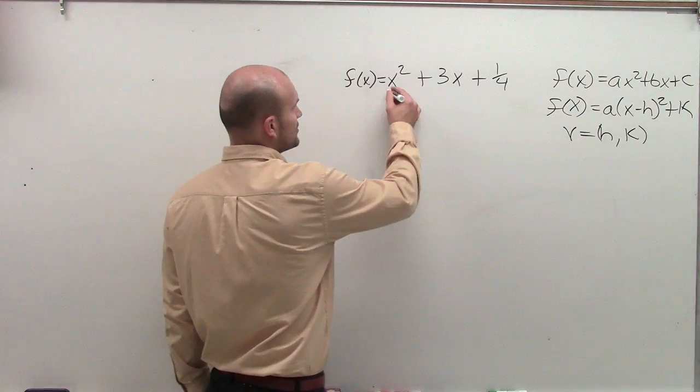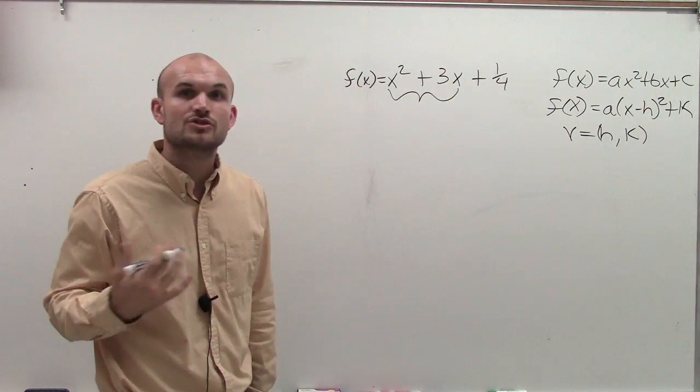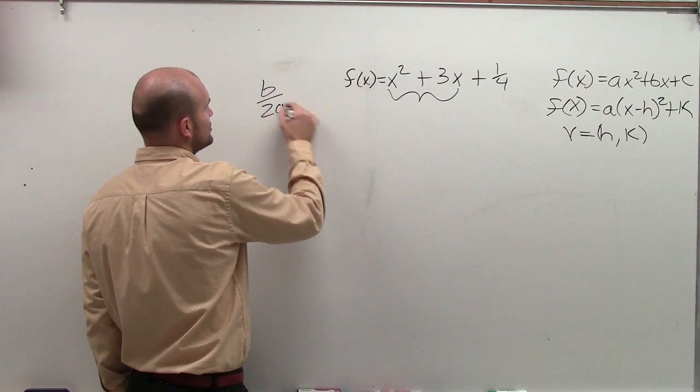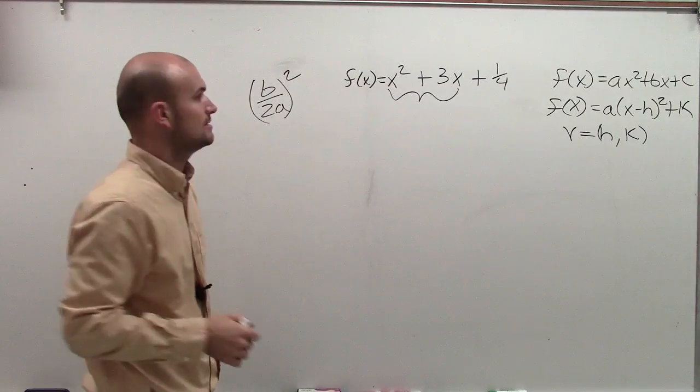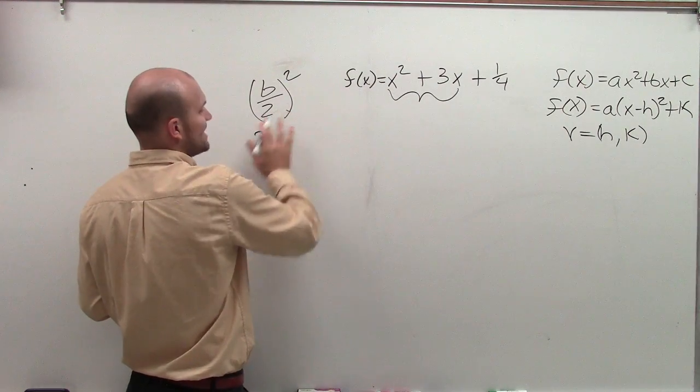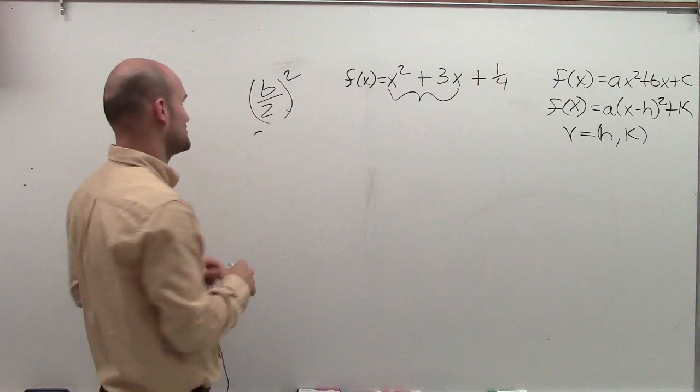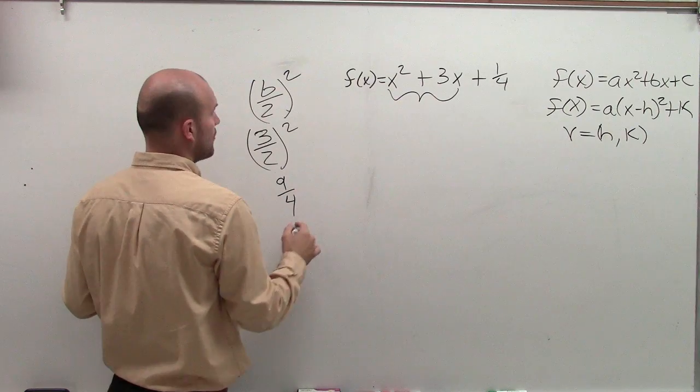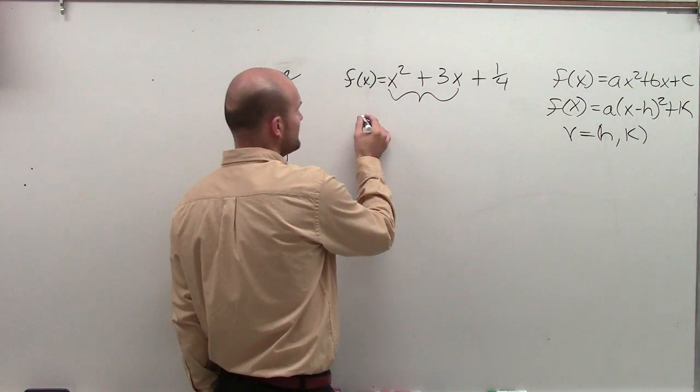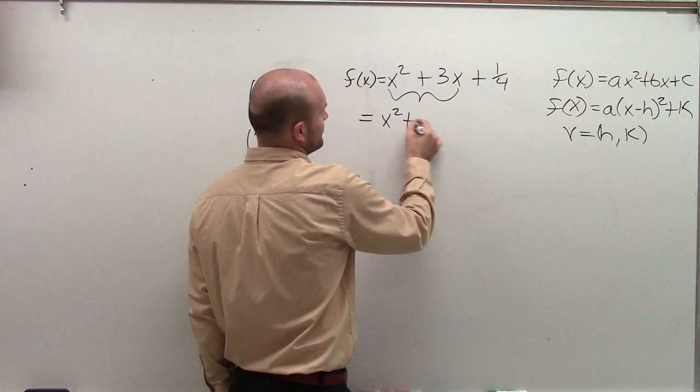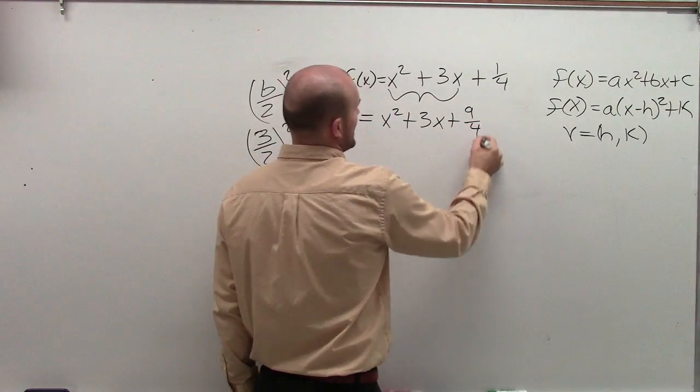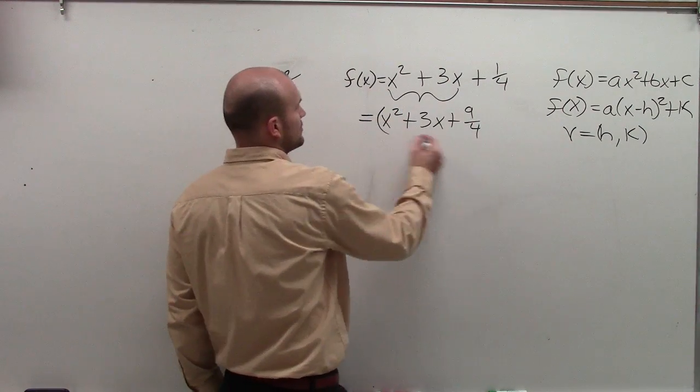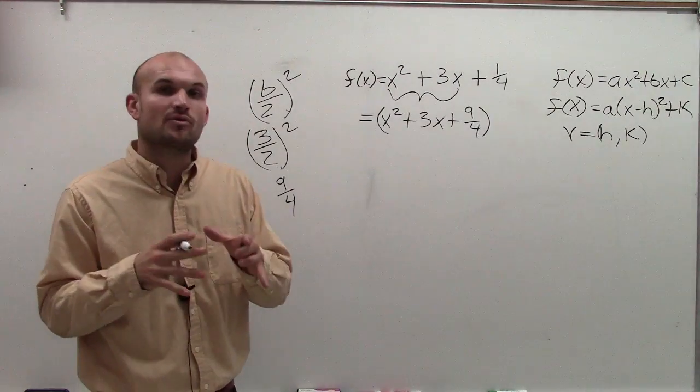Then the next thing we need to do is we need to create this to be a perfect square trinomial. So to do that, I need to go over b divided by 2 and square it. So here I have 3 divided by 2 squared, which gives me 9 fourths. So I have x squared plus 3x plus 9 fourths. So I'm going to add my b divided by 2 squared to my first two terms. And I'm going to put them in parentheses.